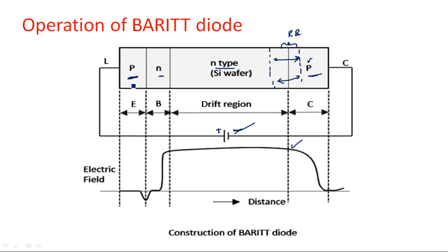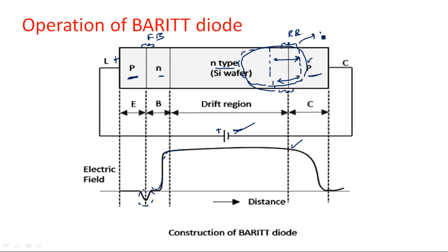At the emitter-base junction, which is in forward bias condition due to the positive supply applied to the P-type, the electric field is very low. As we move towards the base and cross the base junction entering the drift region, because of the negative supply and reverse bias condition, a barrier is developed there and a high amount of electric field is generated. This is the barrier development in the BARITT diode.